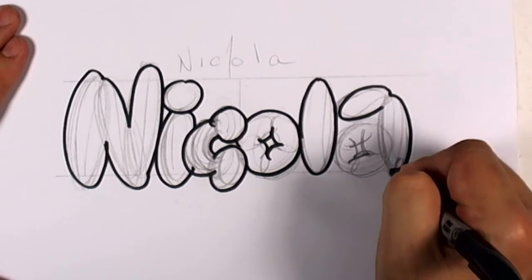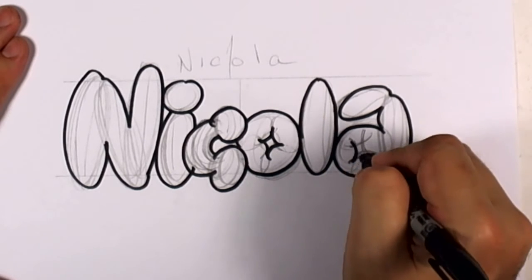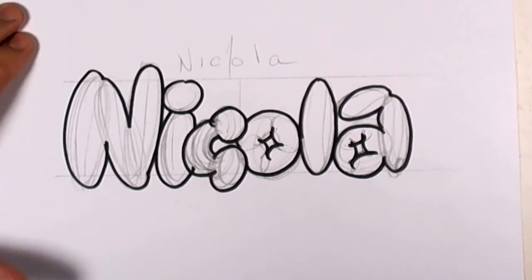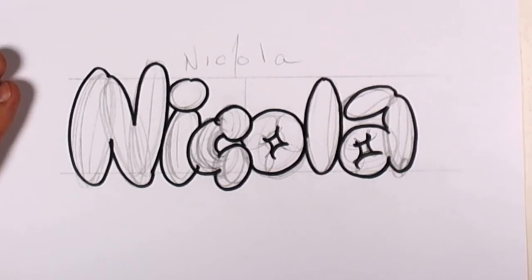And I'm just going to draw that center in like that. Bump, bump like that, come down here, around. This is just like the O and the A. And there we have a bubbly letter Nicola.